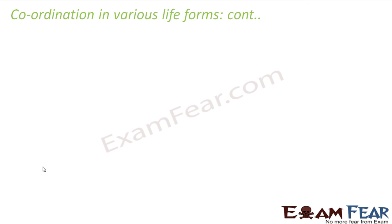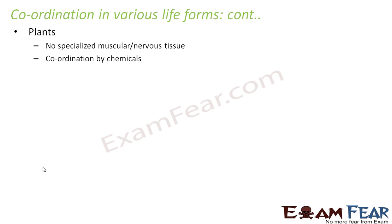Now let us look at coordination in plants. When we talked about the lesson on tissues, we spoke about different types of plant tissues. Plants do not have any specialized muscular tissue or nervous tissue. Muscular tissue is present in animals because animals move from one place to another, but plants are generally immobile. Since they do not have nervous tissue, there is no nervous system in plants. In plants, coordination mainly happens by chemicals.